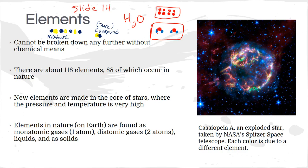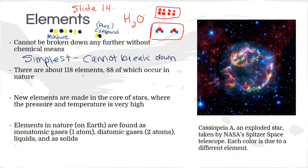Once you've decided something is a mixture, you categorize it as heterogeneous or homogeneous. Going back to elements: elements are the simplest atoms, you cannot break them down further. There are 118 distinctly different atoms, and each one is different because it has a different number of protons. Protons are one of the things that make up an atom.